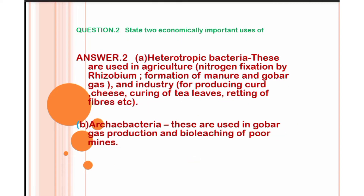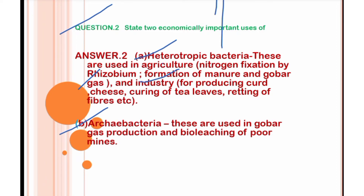Next question: state two economically important uses of heterotrophic bacteria and archaebacteria. Heterotrophic bacteria are used in the field of agriculture — like nitrogen fixation by Rhizobium bacteria — and formation of manure and biogas production. In industry, they are used for producing curd, cheese, curing of tea leaves, and retting of fibers.